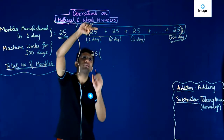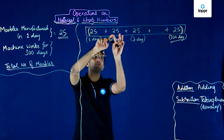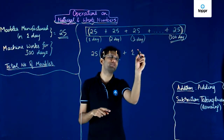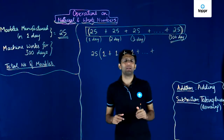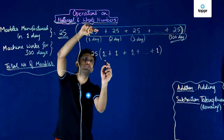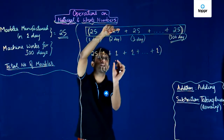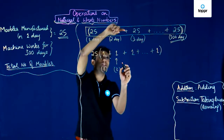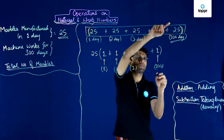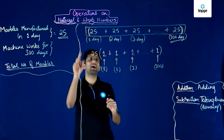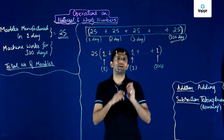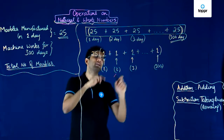I take 25 out, and what remains inside the bracket is: taking 25 out of the first term leaves 1, taking 25 out of the second term again leaves 1, and this continues for every term. So the last term is 25 again, and taking it out leaves 1. Now this 1 corresponds to the 25 for the first day, the next 1 for the second day, the next for the third day, and so on until the 300th. So we have 25 outside the bracket, and inside the bracket we have 300 ones. Performing 1 + 1 + 1... 300 times gives the value 300.